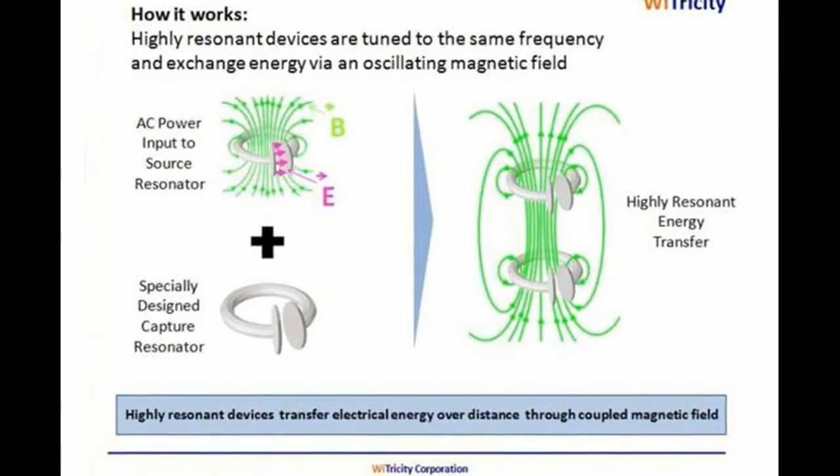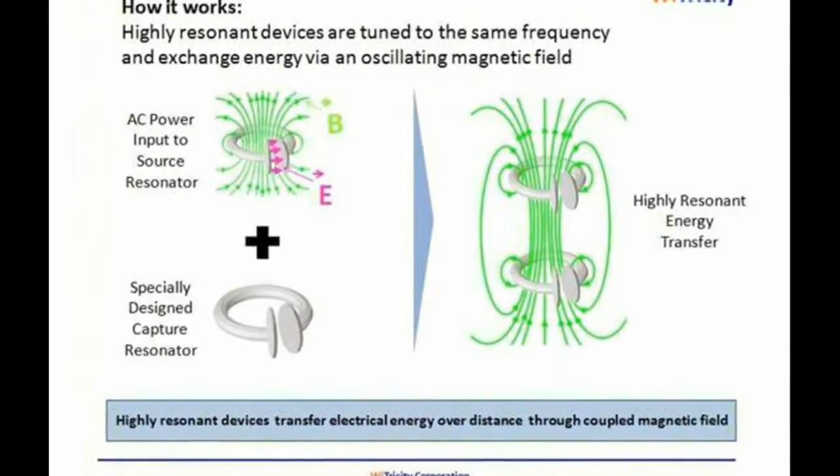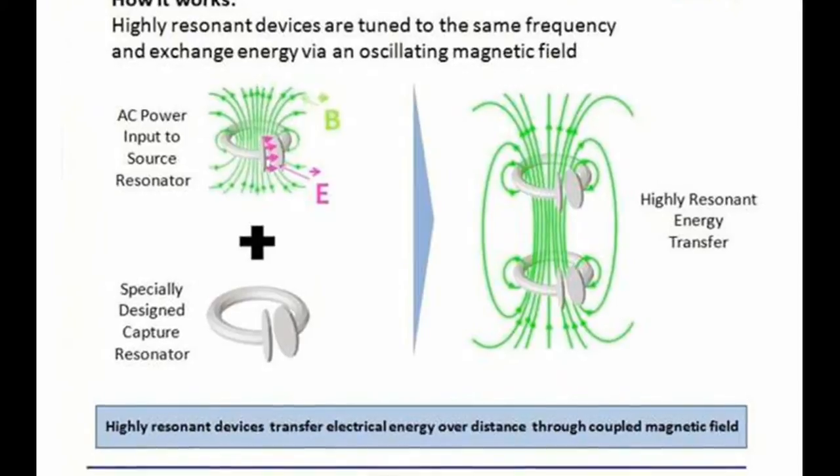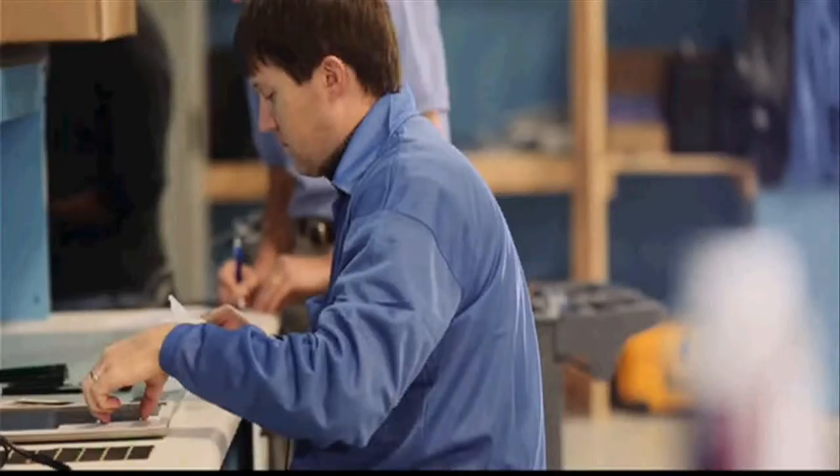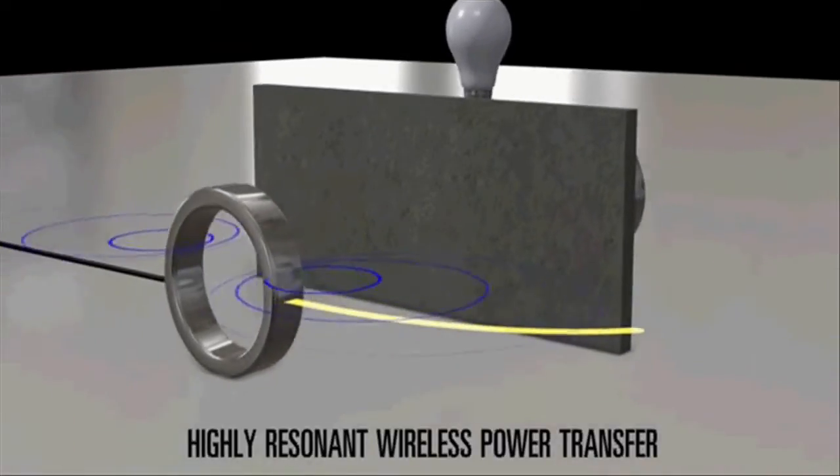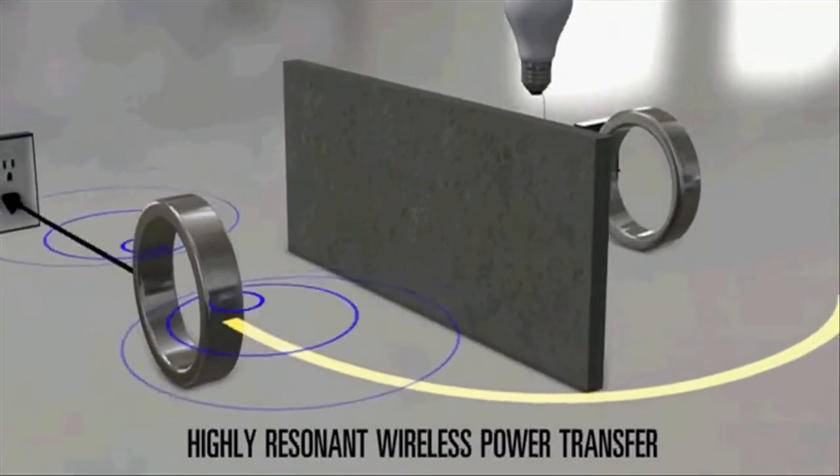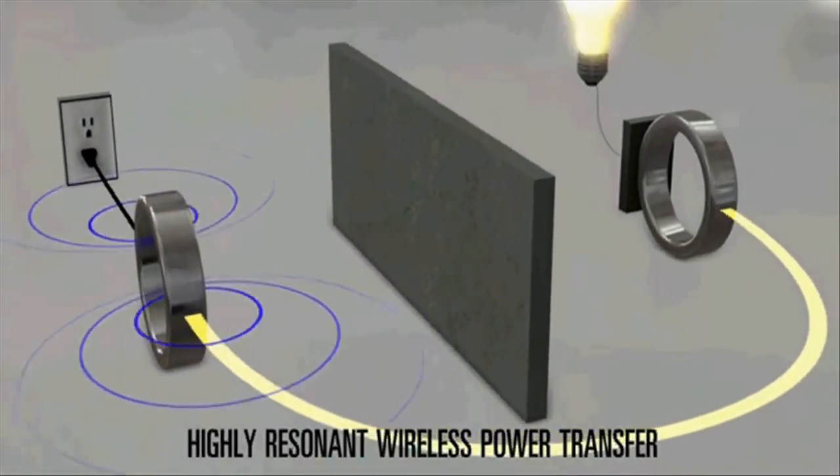WiTricity is based on strong coupling between electromagnetic resonant objects to transfer energy wirelessly between them. Highly resonant wireless power transfer enables users to wirelessly deliver electricity over distance. My name is Marin Soljačić. I am a professor of physics at MIT and I am also a founder of WiTricity. It's a company that works on wireless power transfer.